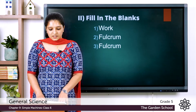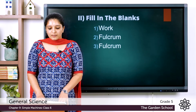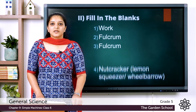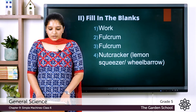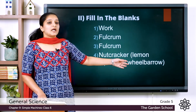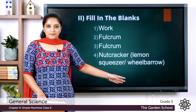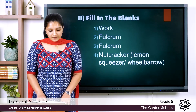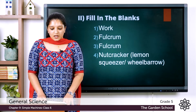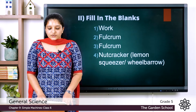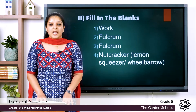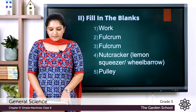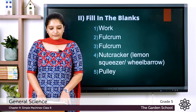The fourth question: a dash is an example of a second class lever. The answer is nutcracker. We can also choose lemon squeezer and wheelbarrow as examples for the second class lever. The fifth question: a dash is a simple machine used to hoist a flag. The answer is pulley. A pulley is a simple machine used to hoist a flag.